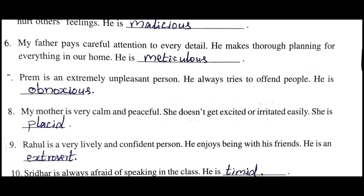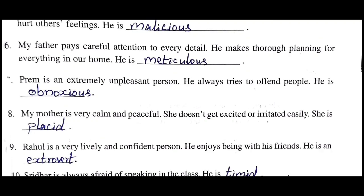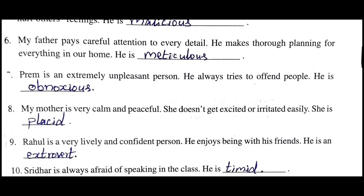Sixth sentence: 'My father pays careful attention to every detail. He makes thorough planning for everything in our home.' The answer is 'meticulous' - meticulous means careful and thorough planning. Seventh sentence: 'Prem is an extremely unpleasant person. He always tries to offend people.' The answer is 'obnoxious' - obnoxious means extremely unpleasant. Eighth sentence: 'My mother is very calm and peaceful. She doesn't get excited or irritated easily.' The answer is 'placid' - placid means very calm and peaceful.